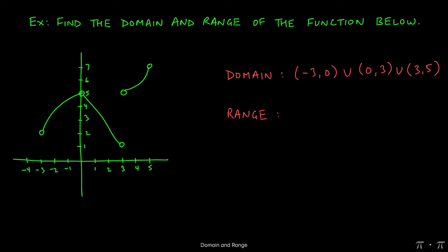For the range, we're looking at the lowest y value to the highest y value that the function actually passes through. The function does not pass through the y value one because there's an open circle there, and on the other side the function doesn't hit one either. So we start at one and go up. Between one and two there are no y values on the left portion, however there are y values on the right side, so we keep going.